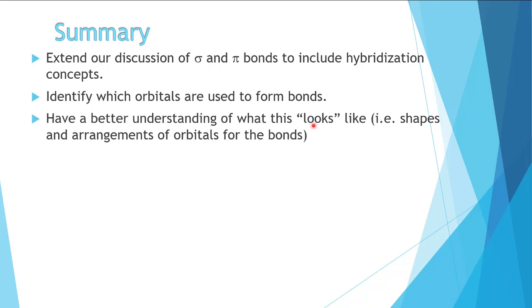So in summary, we've now extended our discussion of sigma and pi bonds to include the hybridization concepts. That allowed us to talk about exactly which orbitals are forming the different bonds, both the sigma bonds and the pi bonds. We have a better understanding of what this looks like as well. We walked back through those pictures to see how the different hybrid orbitals on the p orbitals formed these different shapes.